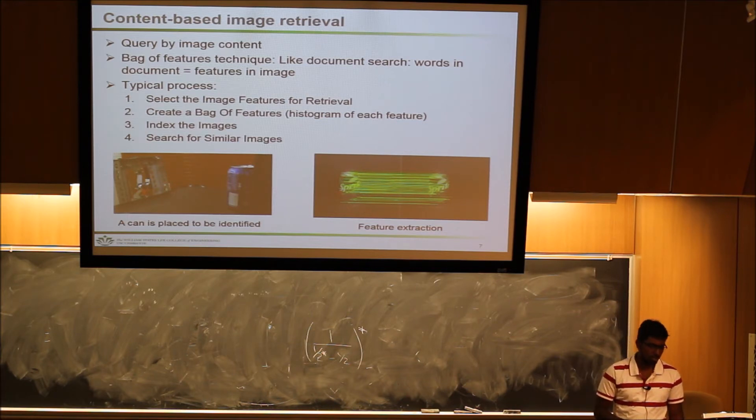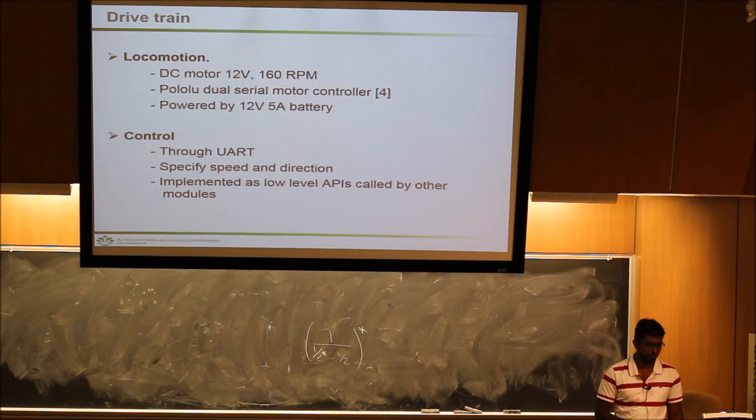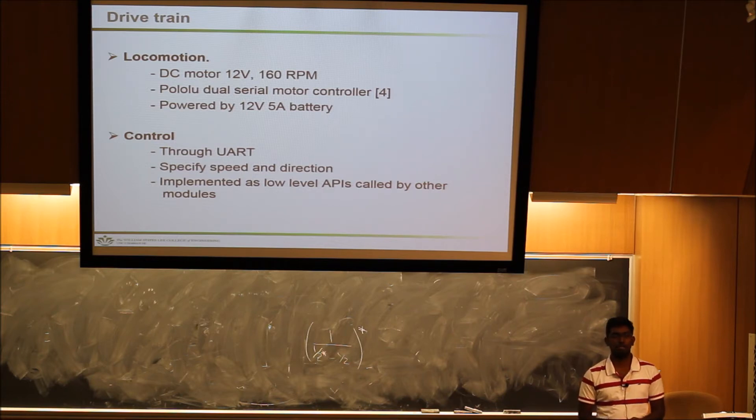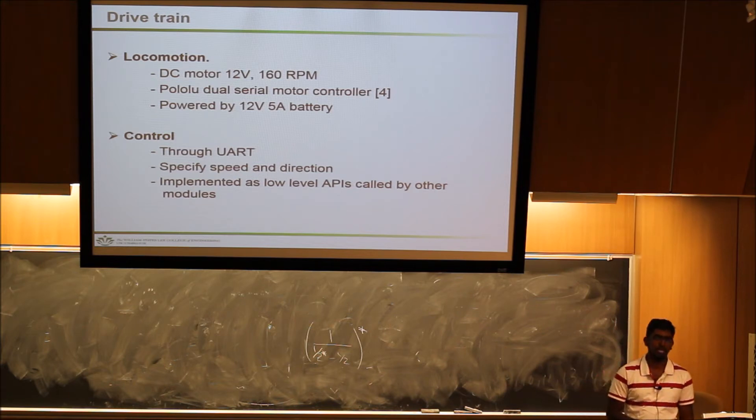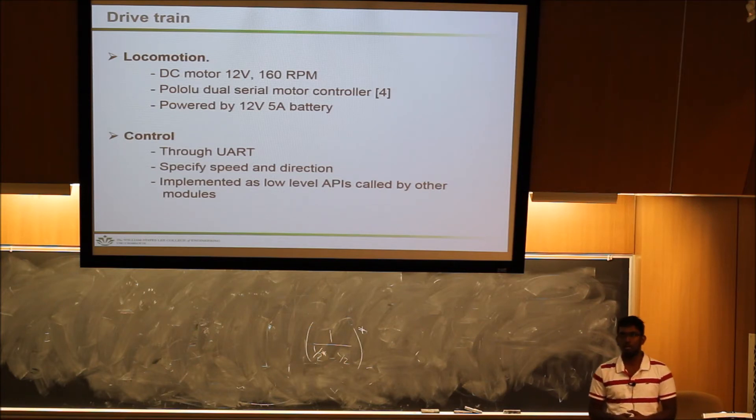We used a 12-volt DC motor for the actual navigation and a Pololu dual serial motor controller. The drivetrain was implemented as a very low-level API, so it is dormant in itself.